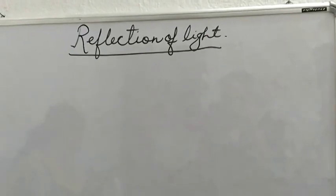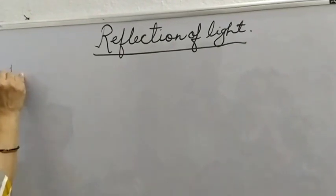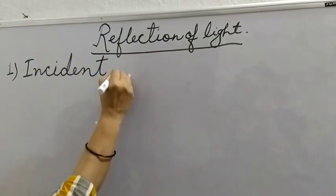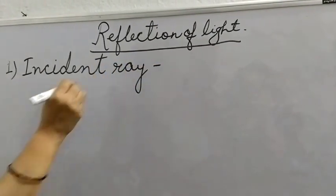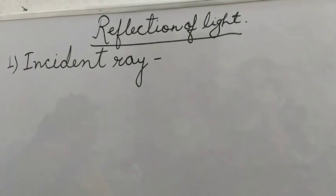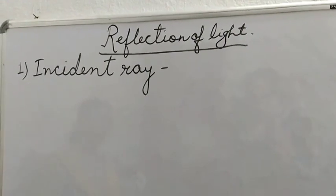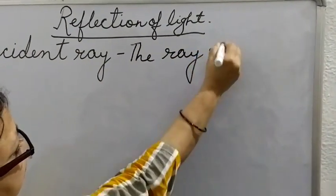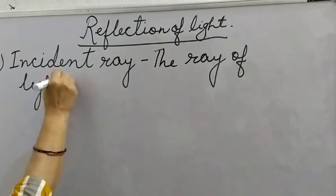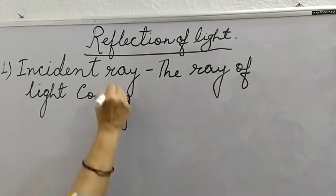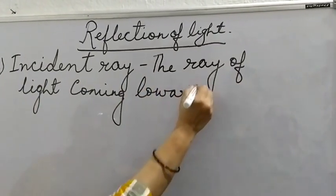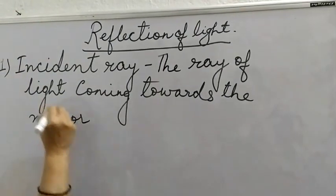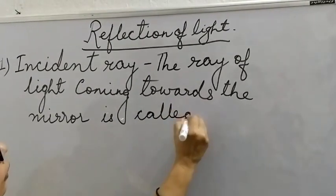So first of all, incident ray. What is an incident ray? The ray of light coming towards the mirror is called the incident ray.